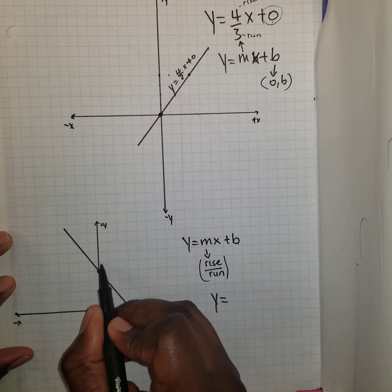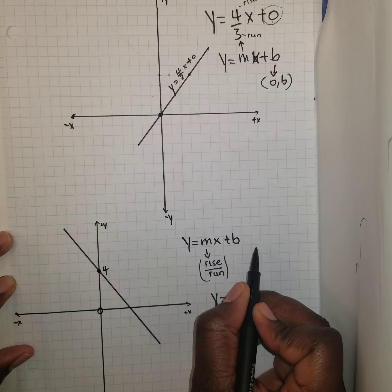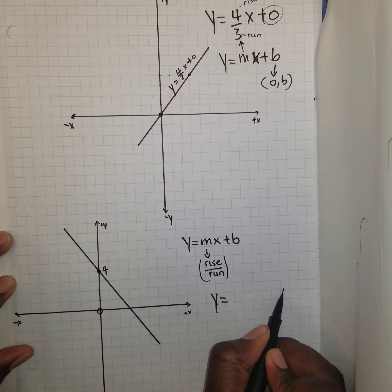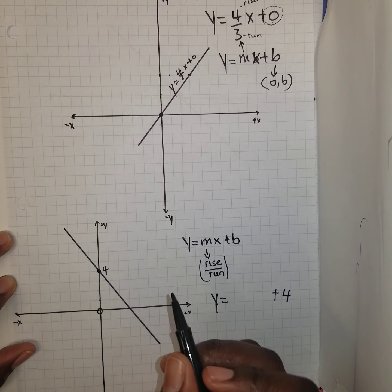Counting up: 1, 2, 3, 4 — so this point is 4. We can identify that b is a positive 4.